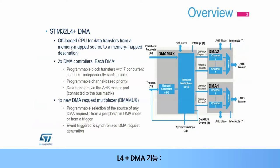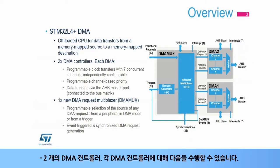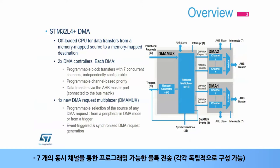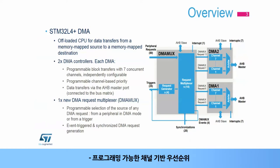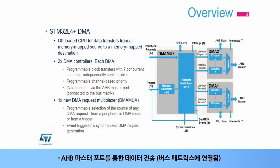L4 Plus DMA features: two DMA controllers. For each DMA controller, it is possible to do programmable block transfers with seven concurrent channels, each of which are independently configurable, with programmable channel-based priority, and data transfers via the AHB master port connected to the bus matrix. There is also a DMA request multiplexer, or DMA MUX,